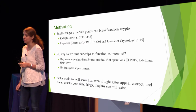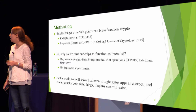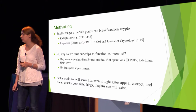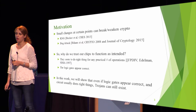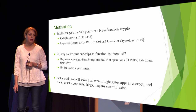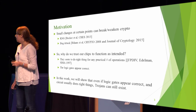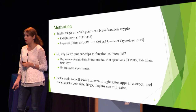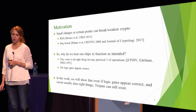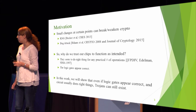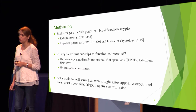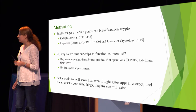So why do we trust our chips to work correctly? They seem to do the right things for a practical number of operations. For example, the floating point division bug, which affected the floating point division unit of a former Intel processor, involved extremely rare bugs and was discovered accidentally. Also, the logic gates of our chip appear correct. In this work, we will show that if the logic gates appear correct and they do the right things most of the time, a Trojan can still exist.